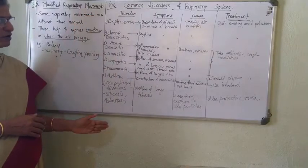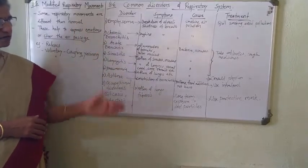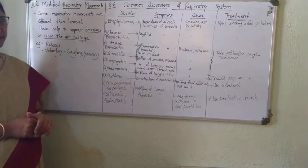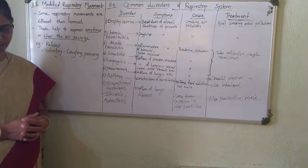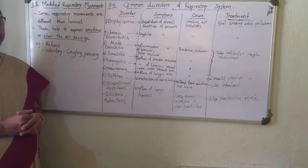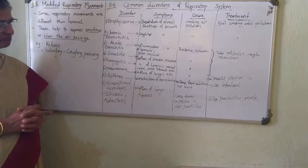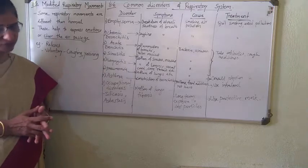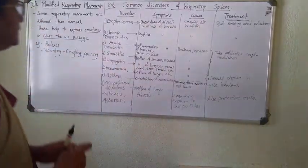Learn the complete table covering all eight disorders — names, their respective symptoms, causes, and treatments. This may be asked as a one-mark MCQ or as a detailed note. With that, we complete section 8.6.